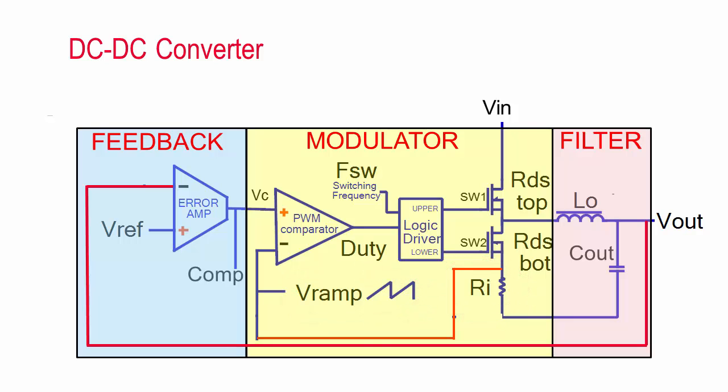One way to model the DC-to-DC converter is to generate a time domain equivalent of each element and then use a transient simulator to solve for many time points per cycle and many cycles per simulation. Time domain simulation is slow and doesn't support AC characteristics including Bode plots, output impedance, input impedance, or PSRR, which are frequency domain characteristics.